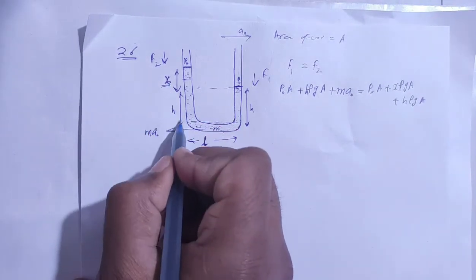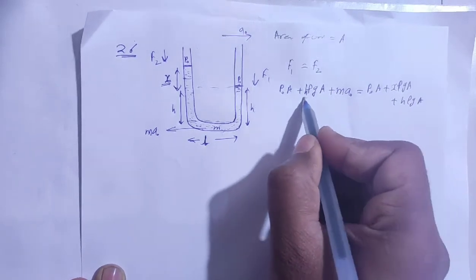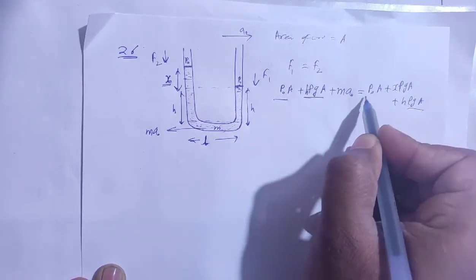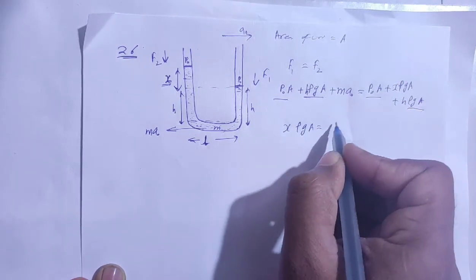Cancel out here, cancel out here. So x rho g A is equal to M A. The mass is density into volume.